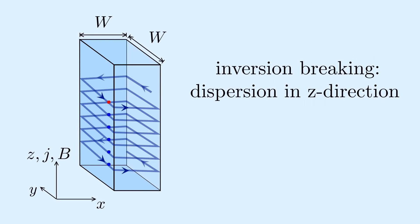If we break inversion symmetry, the surface states acquire a dispersion in the z-direction. They now spiral along the wire. Therefore, the surface states have the shape of a solenoid and carry a significant current along the wire.